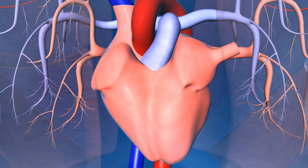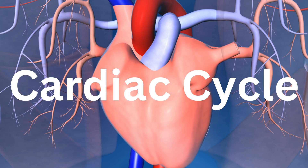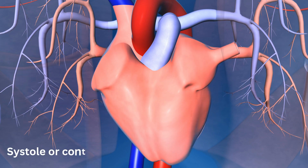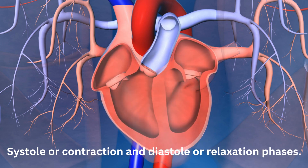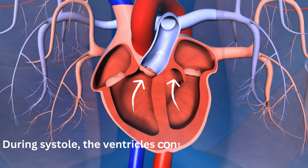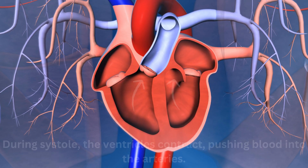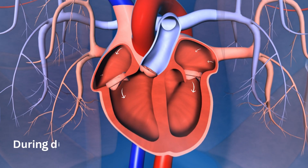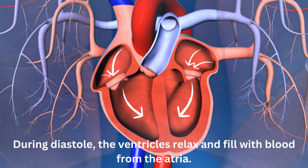The heart undergoes a rhythmic cycle known as the cardiac cycle, which includes systole, or contraction, and diastole, or relaxation phases. During systole, the ventricles contract, pushing blood into the arteries. During diastole, the ventricles relax and fill with blood from the atria.